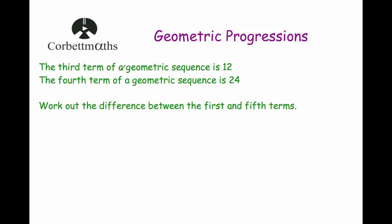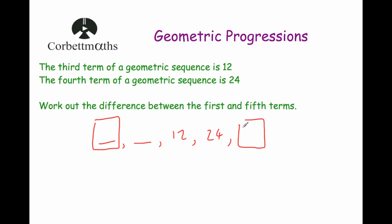Let's look at something more complicated. The third term of a geometric progression is 12, and the fourth term is 24. The question asks us to work out the difference between the first term and the fifth term. I like to list and draw out the sequence to visualize it. We can see we are multiplying by 2. Going backwards, the second term is 6 and the first term is 3. Going forward, the fifth term is 48. The difference between the first term, 3, and the fifth term, 48, is 45.